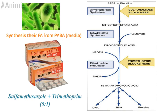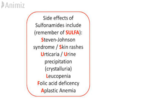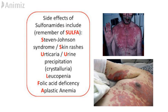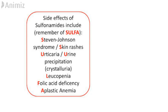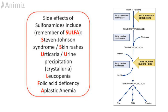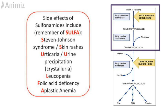Sulfonamides are very commonly used antibiotics, but there are certain side effects associated with them. The first is Stevens-Johnson syndrome, which is a hypersensitivity skin reaction. Then there is crystalluria, which is uric acid precipitation in urine, leukopenia, folic acid deficiency, and aplastic anemia, which is also due to folic acid deficiency. The reason for folic acid deficiency is that sulfonamide acts on the folic acid synthesis pathway. In bacteria, they synthesize their own dihydrofolic acid, whereas humans obtain it from food.